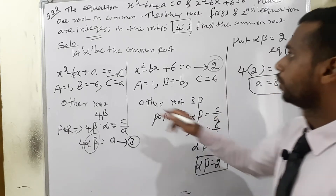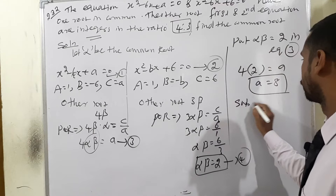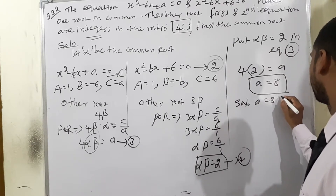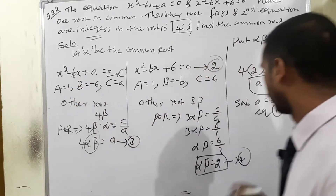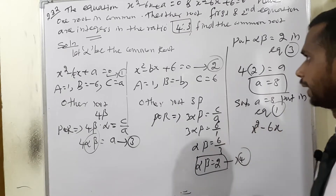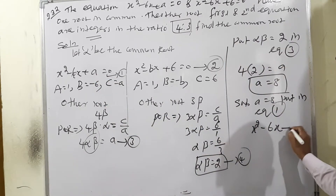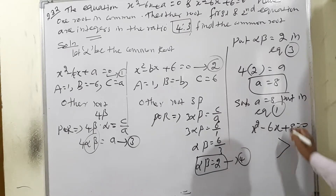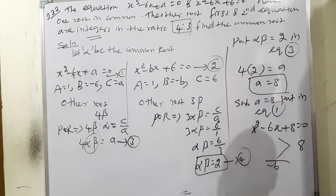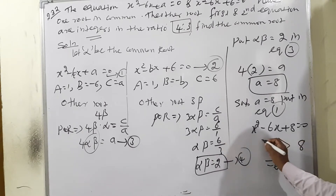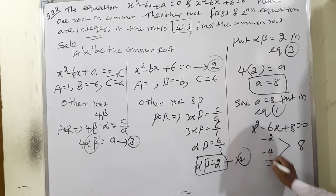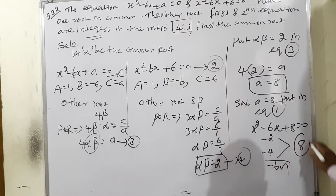Substitute a = 8 into equation 1: x² - 6x + 8 = 0. Using the sum-product rule: product is positive 8, sum is negative 6. Since product is positive, both signs are the same; since sum is negative, we select -2 and -4. Check: (-2) + (-4) = -6, (-2)×(-4) = +8. Therefore the roots are x = 4 and x = 2.